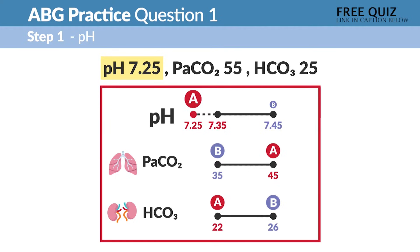7.25 is way below 7.35, so is it acidosis or alkalosis? Well, using our chart, we know the A is for acid, so acidosis.